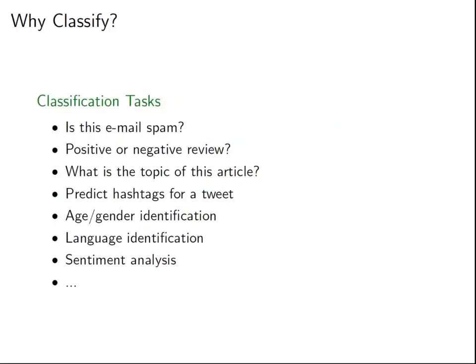There's a whole list of text classification examples. Is this email spam? Given movie reviews, is this a positive or negative review? Rotten Tomatoes, for instance, automatically classifies whether someone is enthusiastic about a film. There's identifying the topic of an article, predicting hashtags for a tweet, age and gender identification from documents, and also plagiarism detection — has this student actually written this essay, or was it written by someone else? That's a form of text classification.